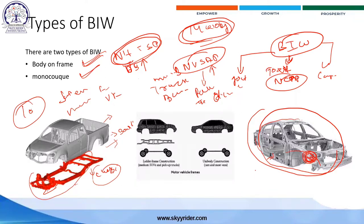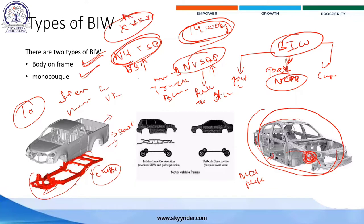The safest vehicle on the planet currently is the Tesla Model 3. It has a five-star rating — no other vehicle has a five-star rating currently, only the Tesla Model 3 has achieved that five-star safety rating.